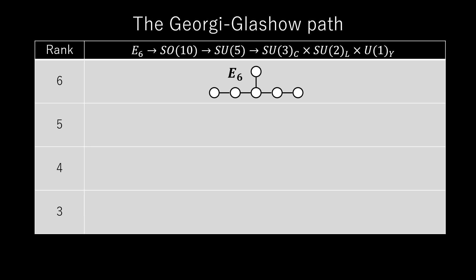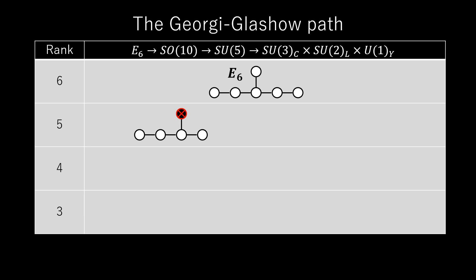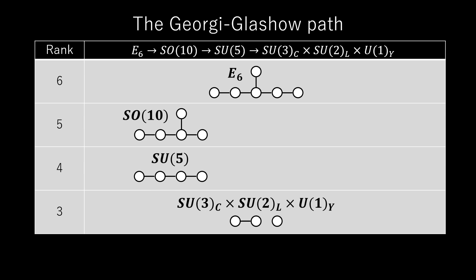The GRG Glashow path. Starting from E6, remove nodes to get SO(10). Remove further to get SU(5). Remove again to arrive at the Standard Model.